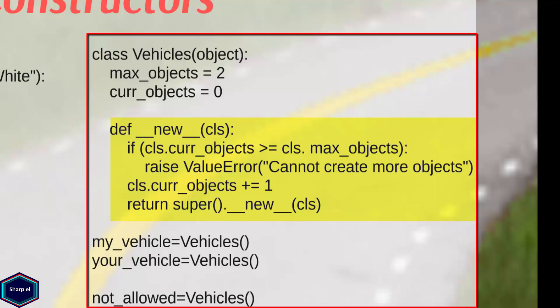I have declared two class attributes, maximum and current number of objects. Inside my constructor, I check where the current number of objects are greater than maximum number of objects. If this is the case, I raise an exception. Otherwise, I increase the variable current number of objects by one.